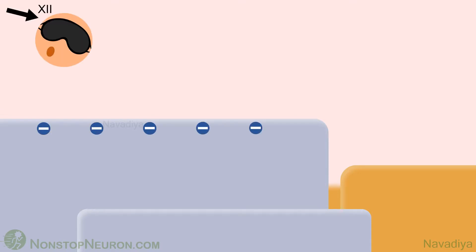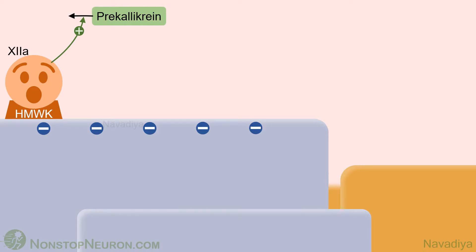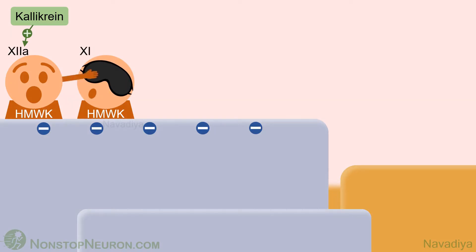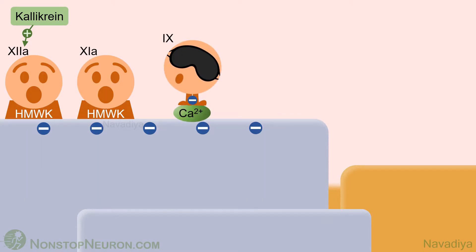The first factor to get activated in this pathway is factor 12. High molecular weight kininogen anchors factor 12 to the platelet surface. Upon contact with the negative surface, factor 12 is activated to factor 12a. Activation by this way is very slow; however, the small quantity of factor 12a generated converts prekallikrein into kallikrein. Kallikrein then speeds up activation of factor 12. Then comes factor 11, which is activated by factor 12a by proteolysis. Next is factor 9, one of those factors whose synthesis is dependent on vitamin K. It has gamma-carboxyglutamic acid residues with negative charge, helping the factor bind with membrane phospholipid via positively charged calcium ions. Then it is activated by factor 11.